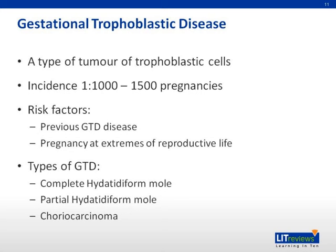Gestational trophoblastic disease is a type of tumor of trophoblastic cells. It is rare, with an incidence of 1 in 1,000 to 1 in 1,500. Risk factors include previous gestational trophoblastic disease or pregnancies at the extremities of reproductive life. Types include complete hydatidiform mole, incomplete hydatidiform mole, and choriocarcinoma.